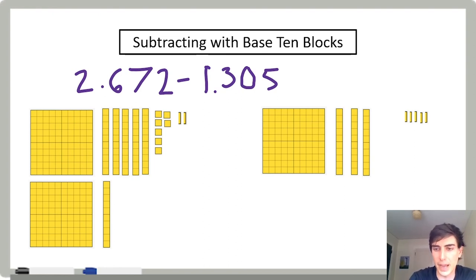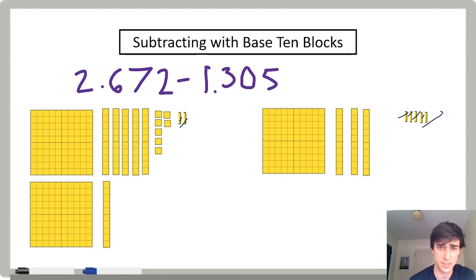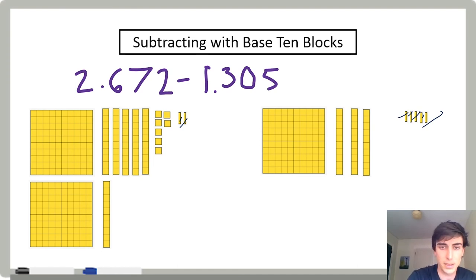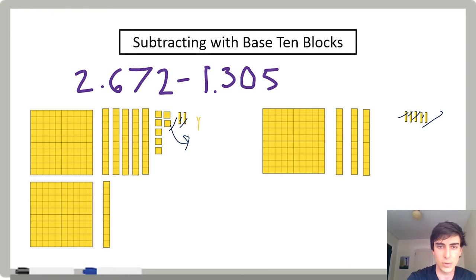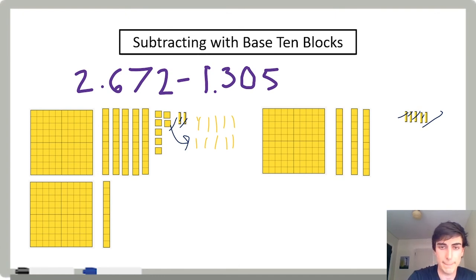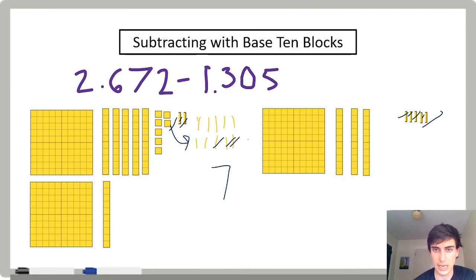I'm going to take away five thousandths — but I could only take away two because there were only two thousandths. I'm going to borrow from a hundredth and make my hundredth into ten thousandths. I've already taken away two thousandths, so I need to take away three more. I'm left with seven thousandths. Now I need to subtract my hundredths — but I already borrowed one hundredth, so I'm left with six hundredths.